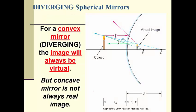A convex mirror is diverging, so the focal length is behind the mirror, and the image will always be virtual. Mathematically: 1/d_i = 1/f − 1/d_o. For a convex mirror, f is negative and d_o is always positive, so d_i is always negative. There's just no way around it — a convex mirror can only result in a virtual image.